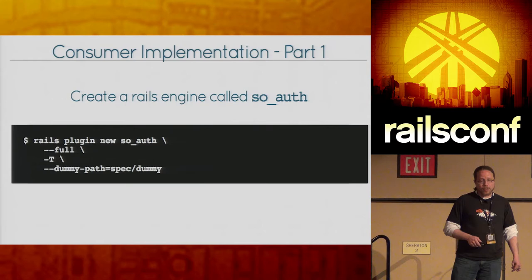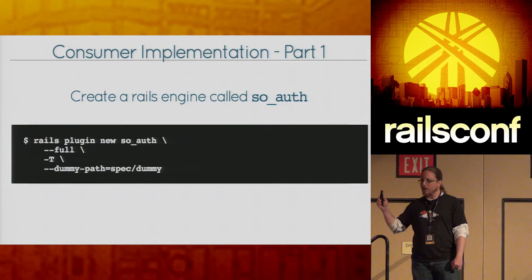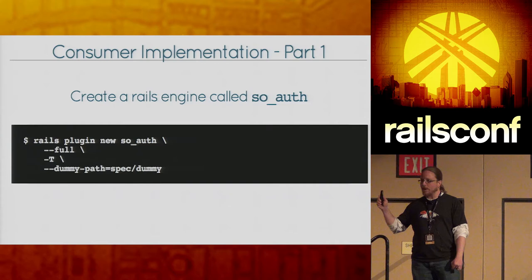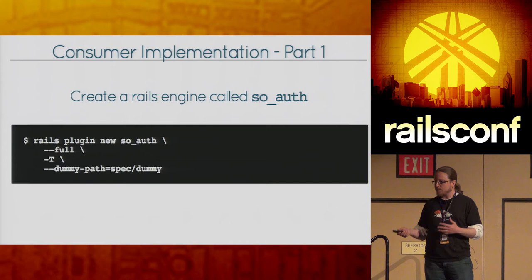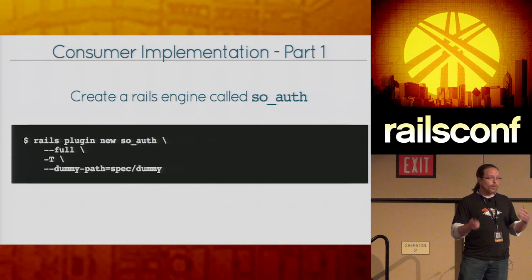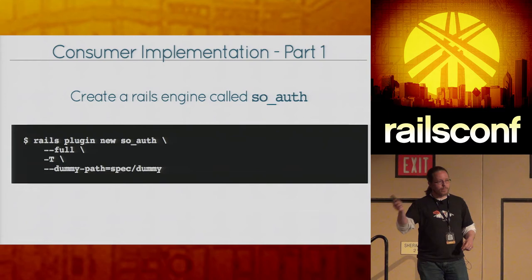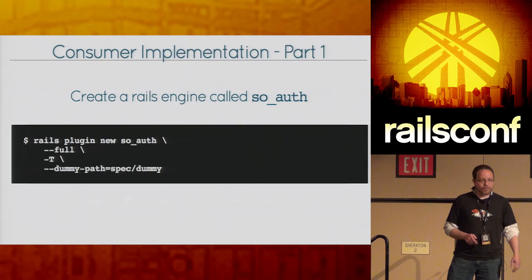We want to do this in a standalone gem that can be incorporated into other projects, so we don't have to re-implement this for every new service. So we just start a new Rails plugin. I did a full plugin because I don't want to have to mess with mounting routes in each of my new services — I just want to assume routes are always available and always do what I expect. If you're building something for developers outside your organization, that might not be the right choice. Then I'm telling it where to put the dummy app we can use to test.